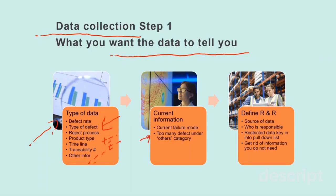The second consideration is the current information — meaning what are the current failure modes you have assigned to your product. Is there too many defects under the 'others' category? I have a slide later on to explain more about this. And lastly, define the roles and responsibilities — who is in charge of what data — and also restrict data entry with a dropdown list to prevent mistakes from wrong data entry.